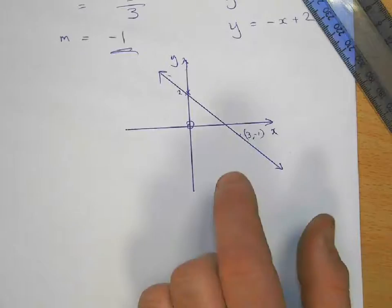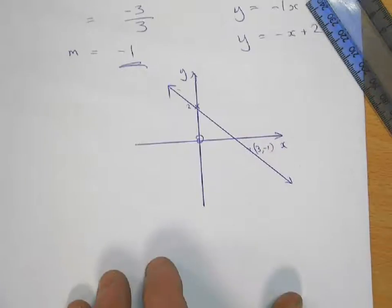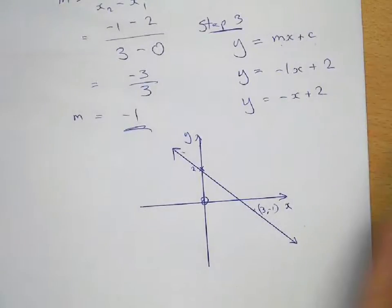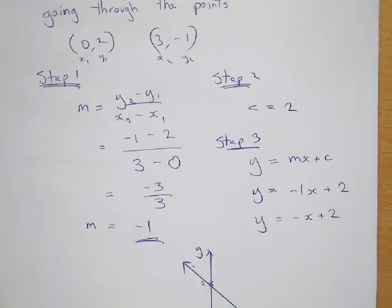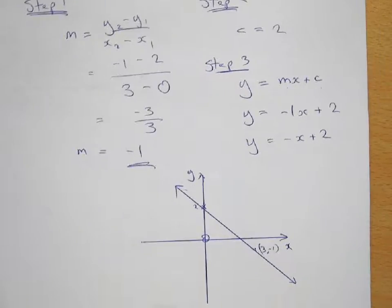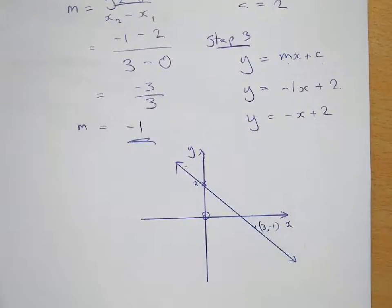But you don't need to draw that out, because hopefully just from looking at those points, you can see that c is going to be two. You always go along, and then up or down, or you go backwards and then up or down. Any other questions? No. Thank you.